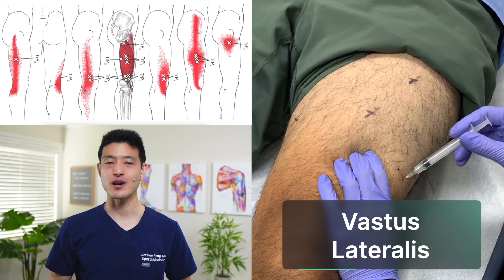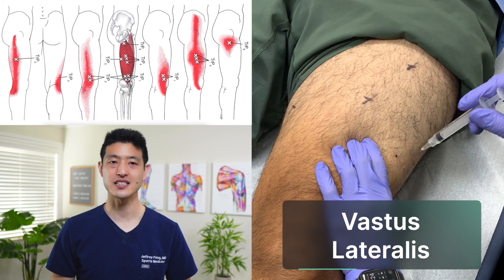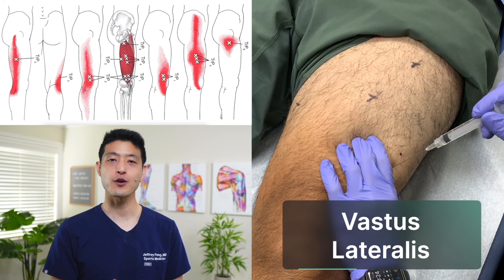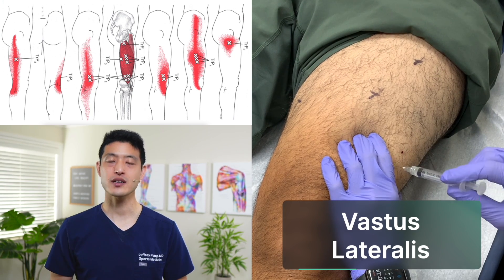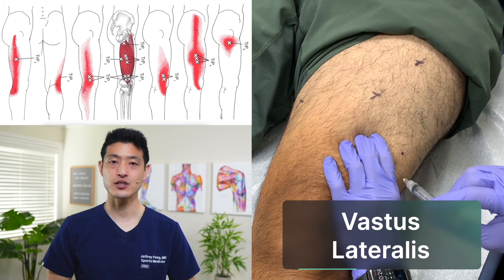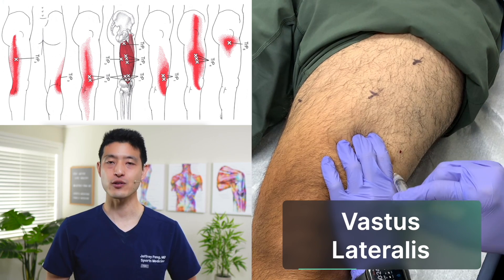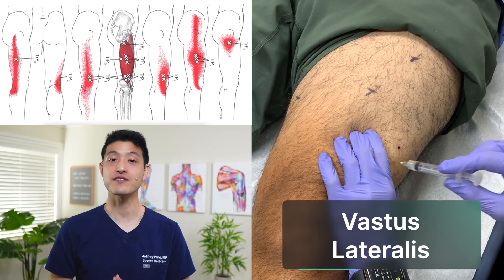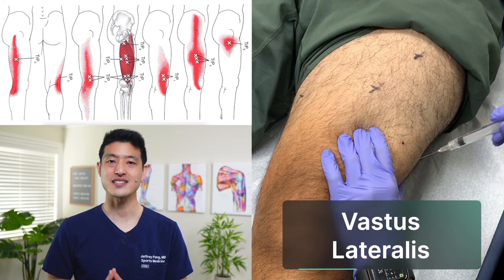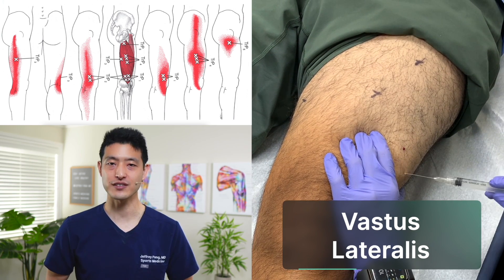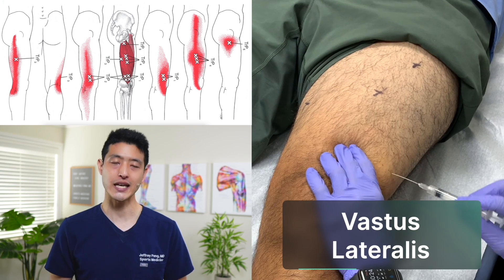Trigger points in the vastus lateralis commonly cause pain towards the outside of the knee that wraps around and below the kneecap. You can see this in the diagram marked TRP1, TRP2, TRP3, and TRP4. The X's mark the spots of the trigger point locations, and the red marks the areas where patients typically feel pain. This is a great example of referred pain.